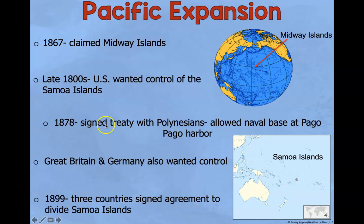In 1878, the US signed a treaty with the Polynesians allowing a naval base at Pago Pago Harbor. The Samoan Islands are right off the coast of Australia. Great Britain and Germany also wanted control. In 1899, three countries signed an agreement to divide the Samoa Islands.